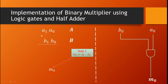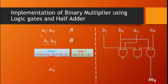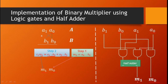Step 2 is cross multiplication: A1 into B0 plus A0 into B1. These are implemented as two separate AND gates. The outputs of these two AND gates are fed into a half adder, since only two bits are being added. The half adder gives sum M1 as the second bit of the result, and carry C1 which is forwarded to Step 3.